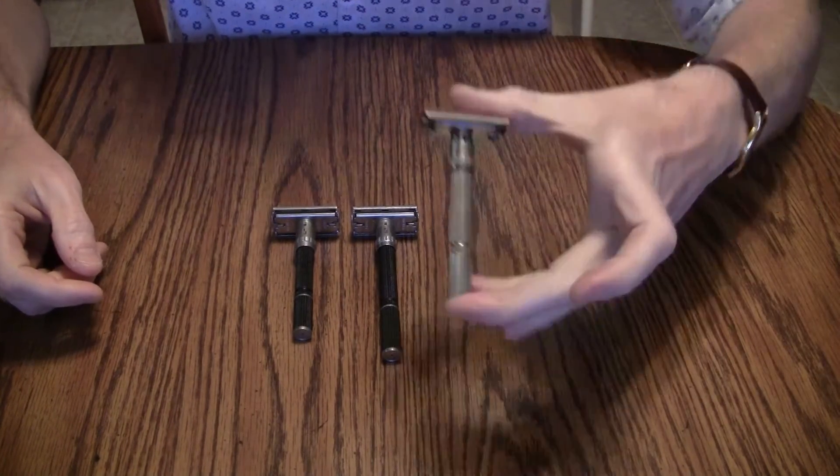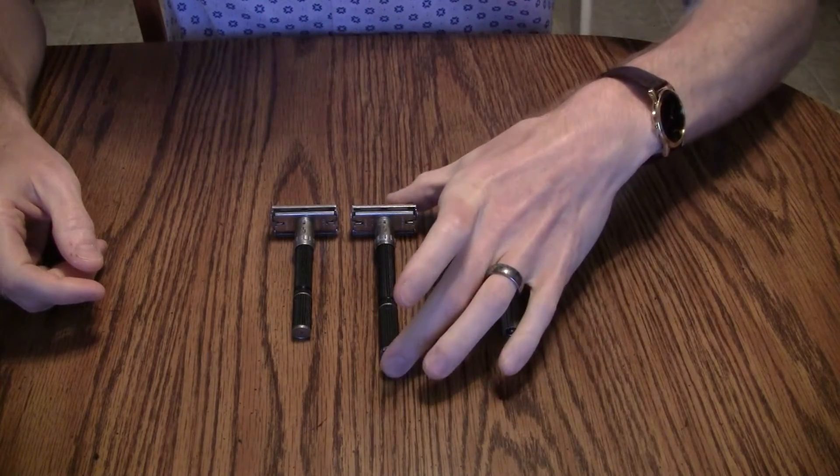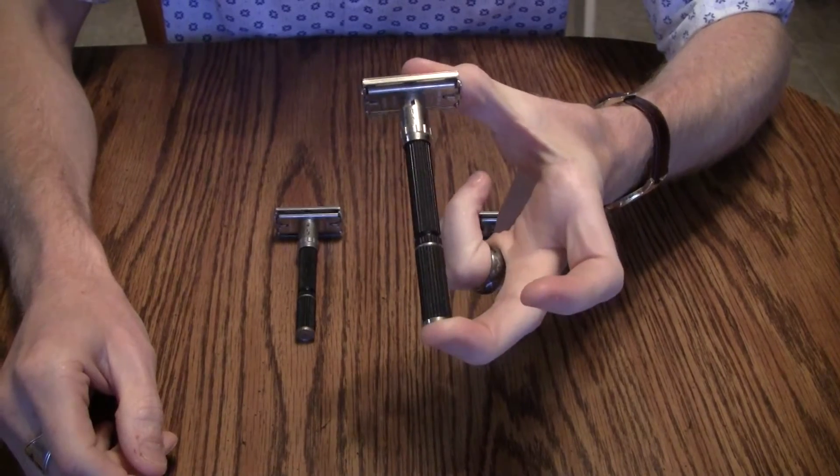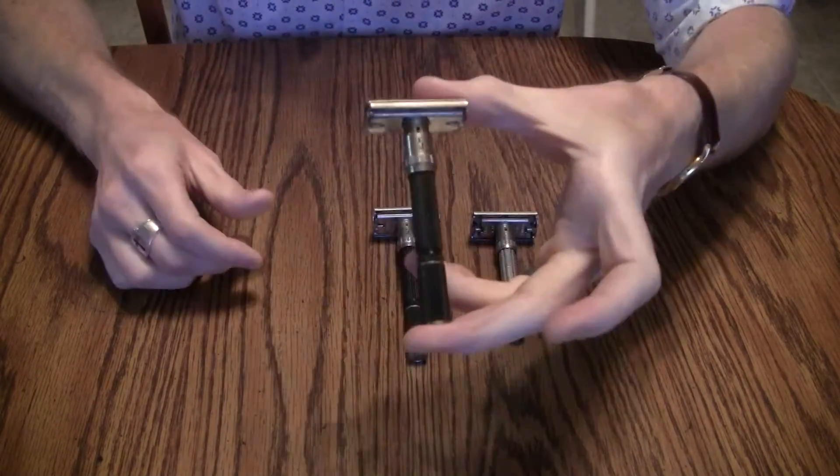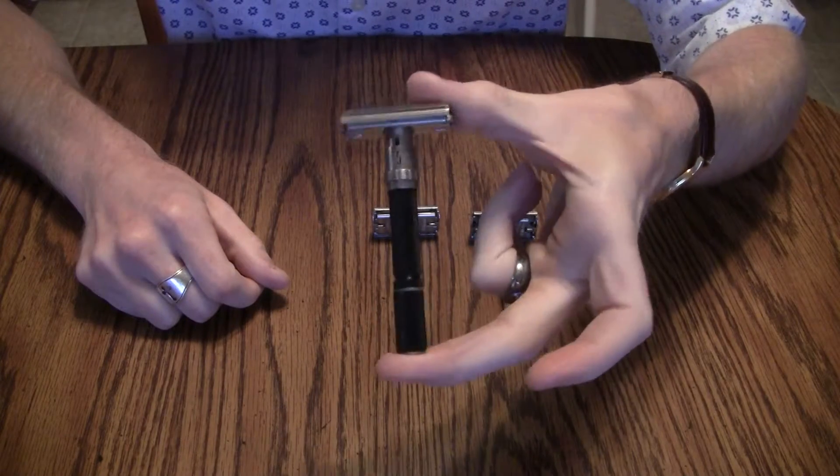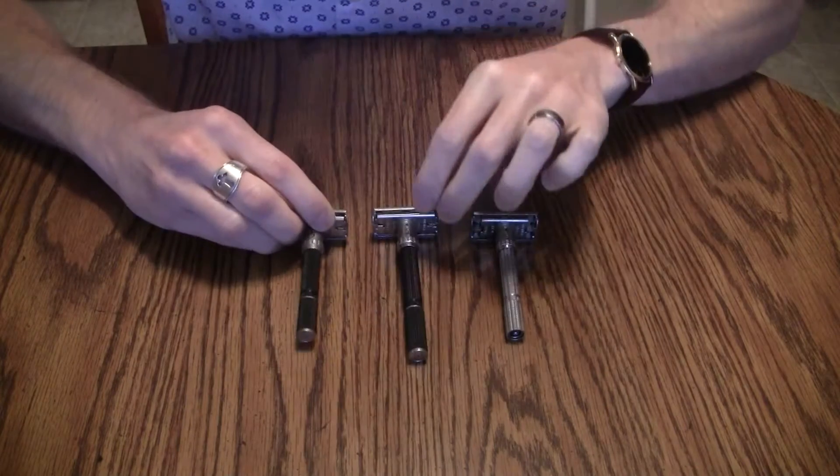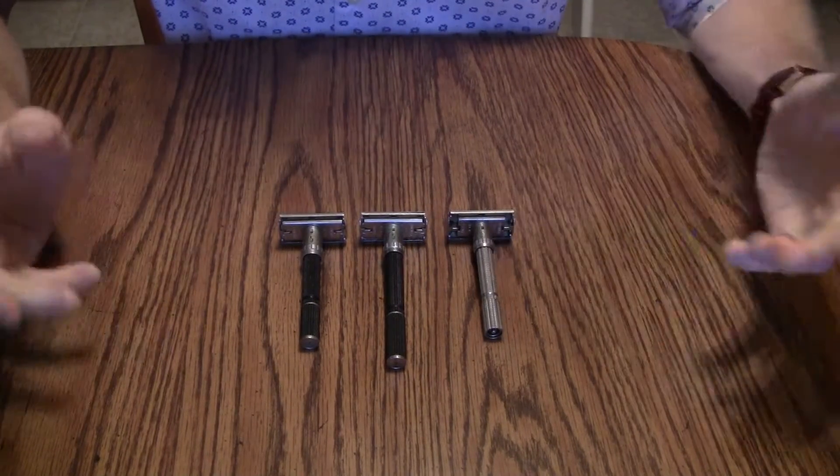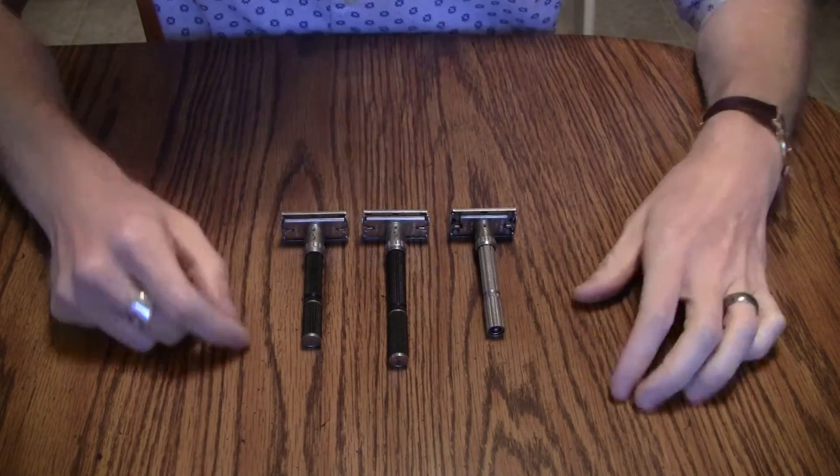They are the Gillette Slim, the Gillette Super Adjustable Long Handled Black Beauty, and the Gillette Super Adjustable Short Handled Black Beauty. Now, Gillette never called these Black Beauties, but that became the common name for them because they are black-handled pretty razors, I suppose.